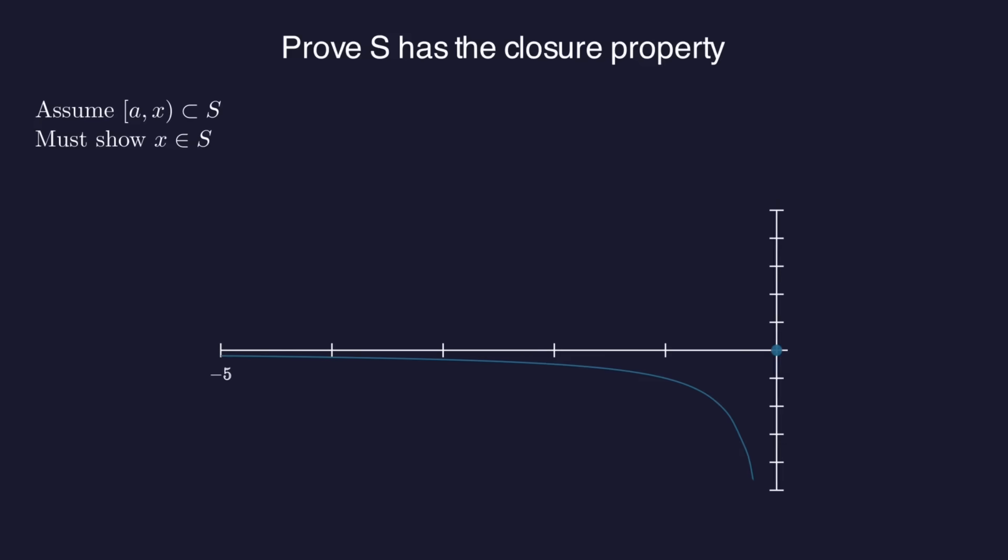To wrap up, we need to prove the closure property. So we assume that the half open interval that includes A but not X is a subset of S. And we need to show that X is also a member of S. Now we have to be careful here. The fact that the half open interval from A to X is a subset of S does not mean that F is bounded on that interval.